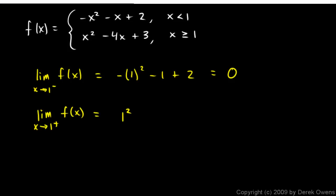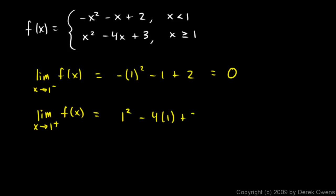Okay, that's going to be 1 squared minus 4 times 1 plus 3. What does that come out to be? 1 minus 4 plus 3. That's 0 also.